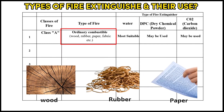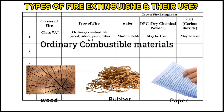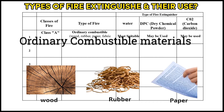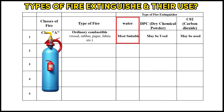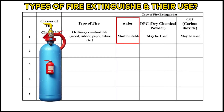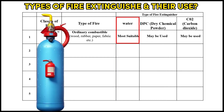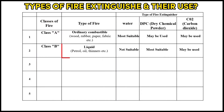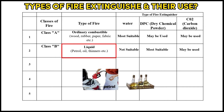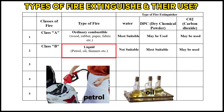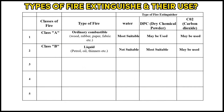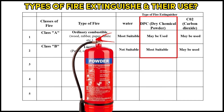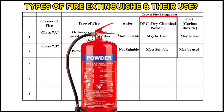Class A fires include wood, rubber, paper, and fabric, considered ordinary combustible materials — the water-type fire extinguisher is most suitable. Class B fires include petrol, oil, and thinner, considered liquid fires — the DCP (dry chemical powder) fire extinguisher is most suitable.